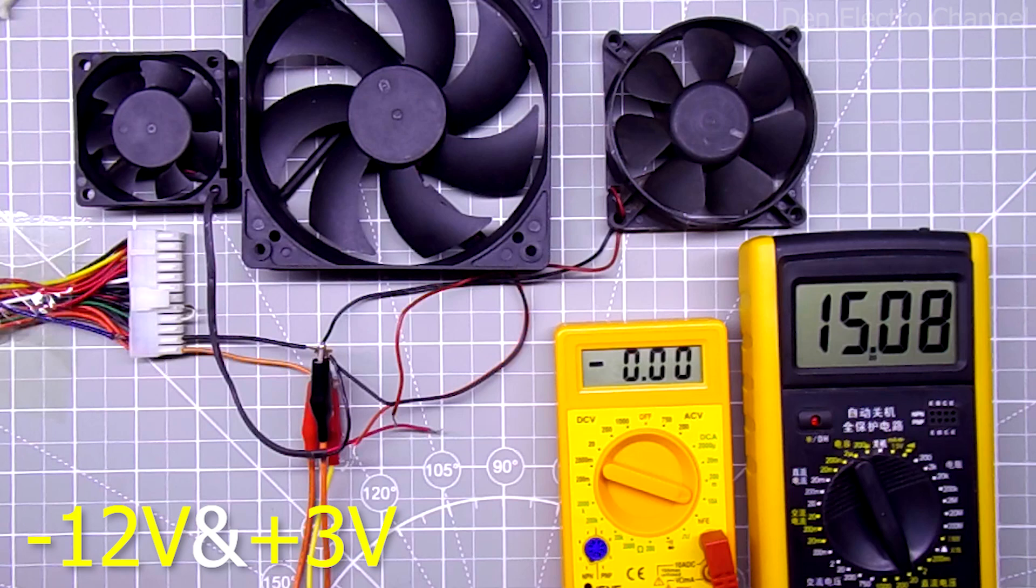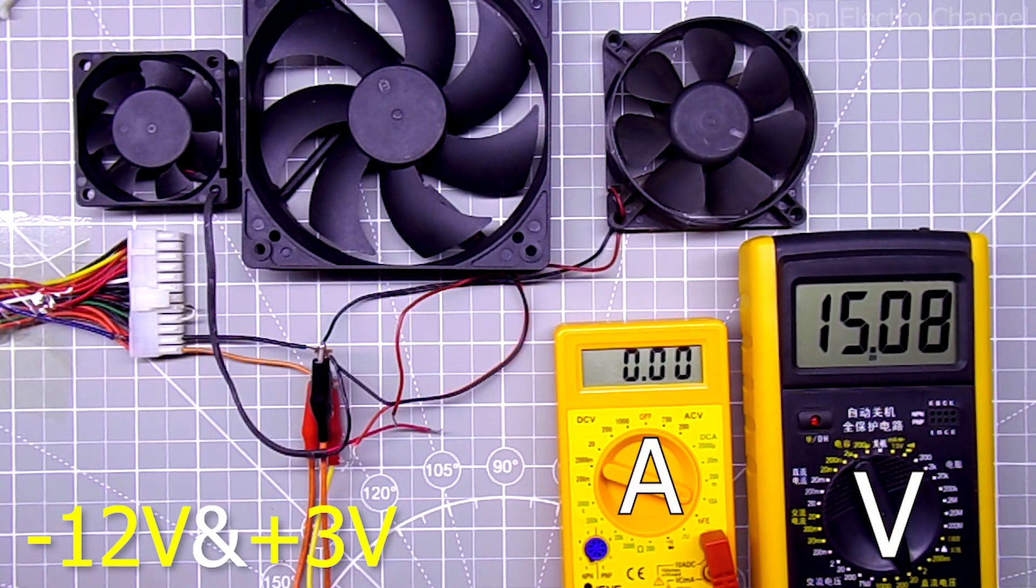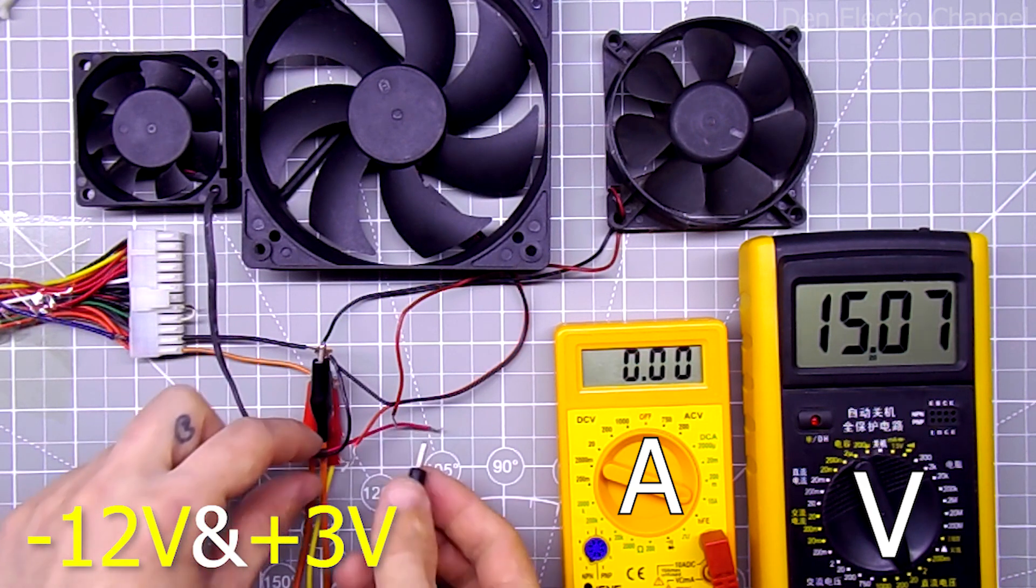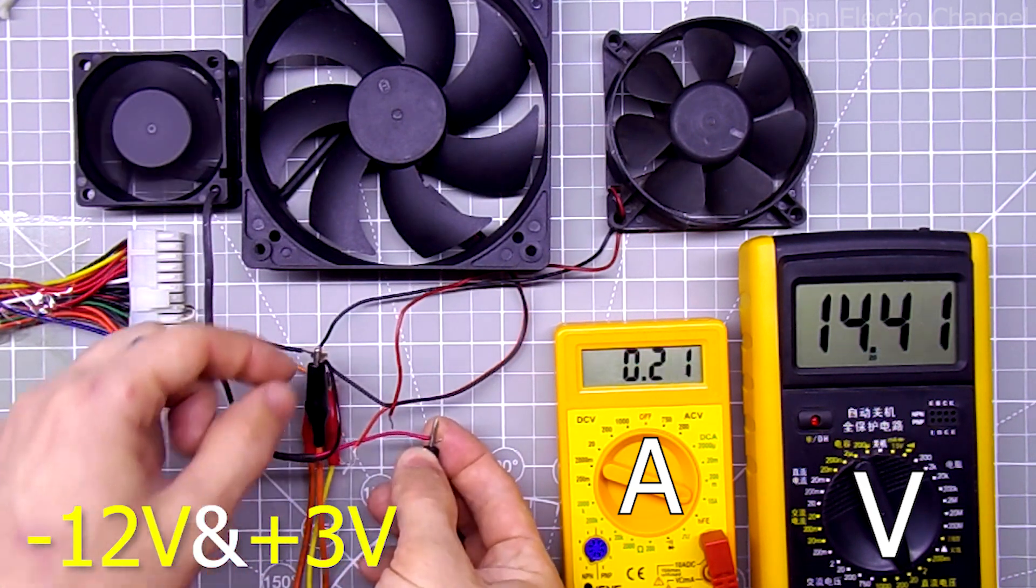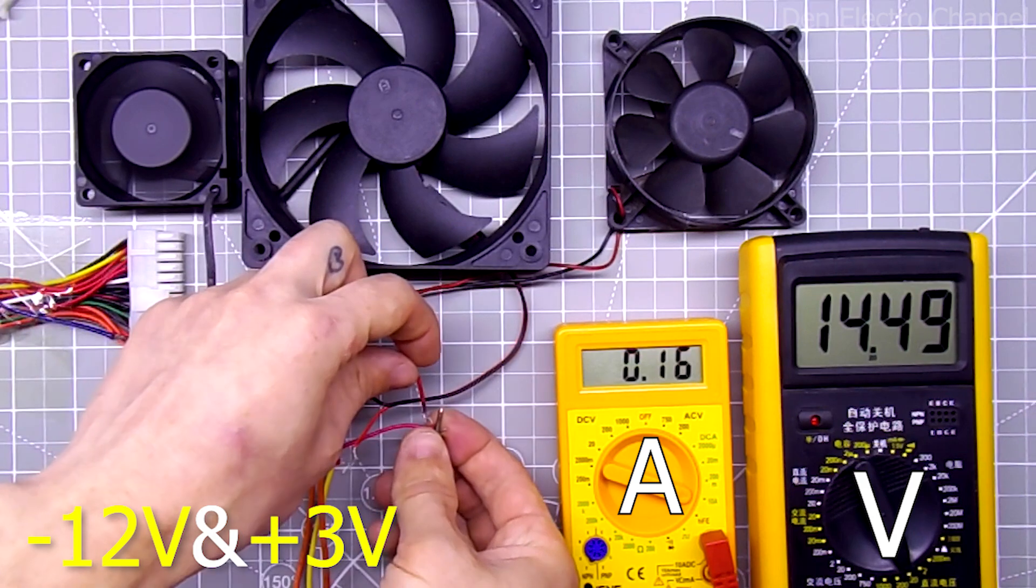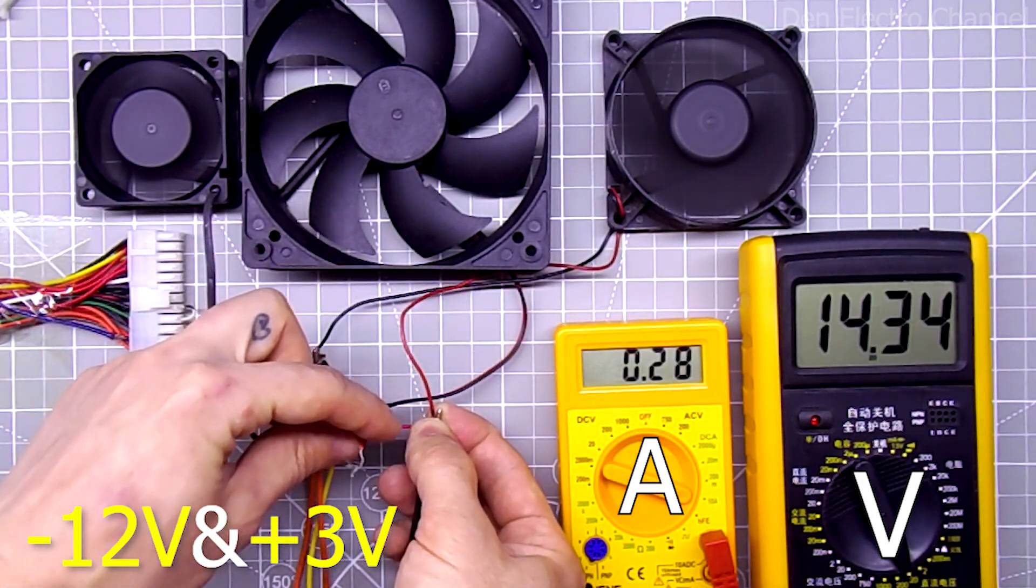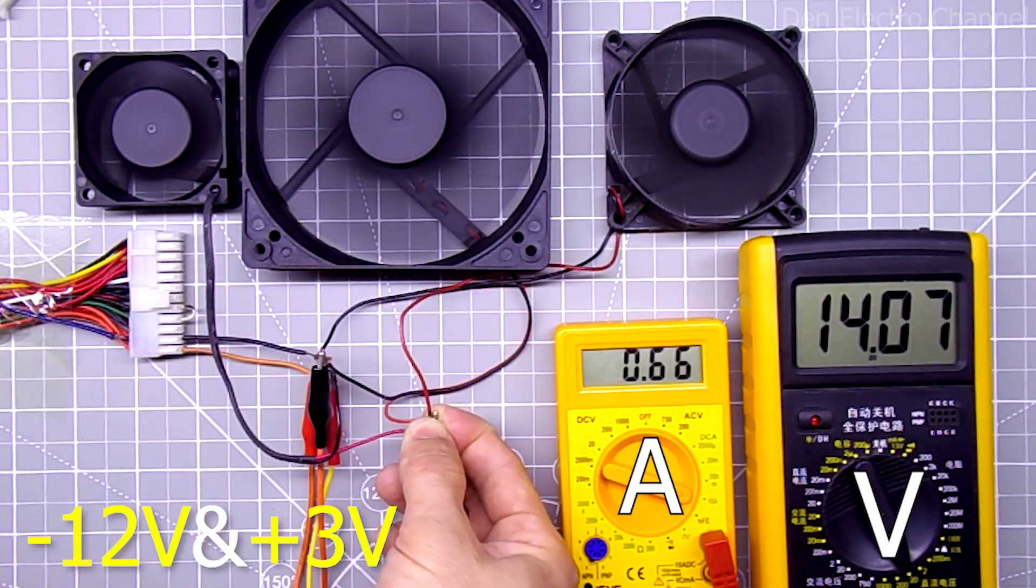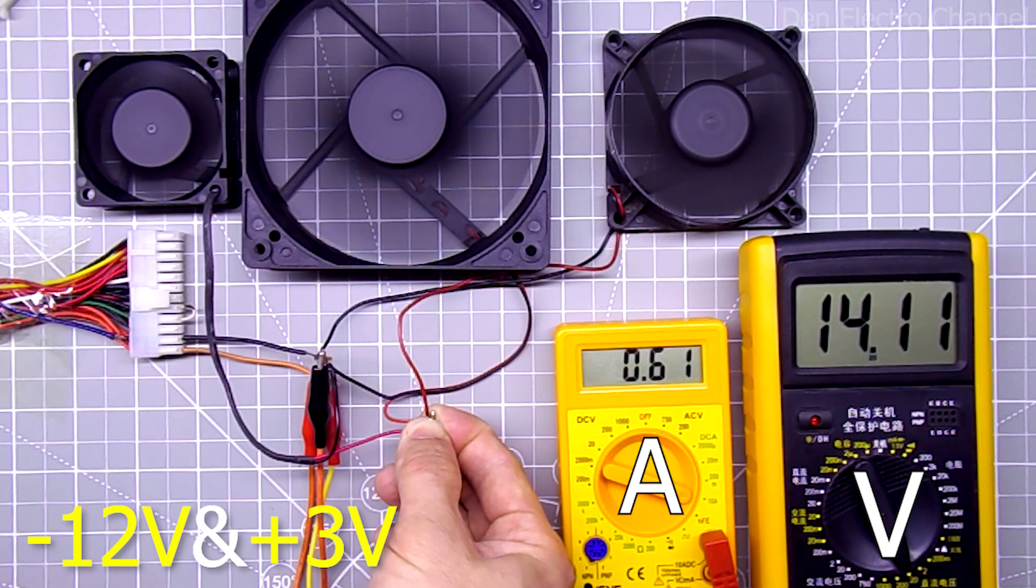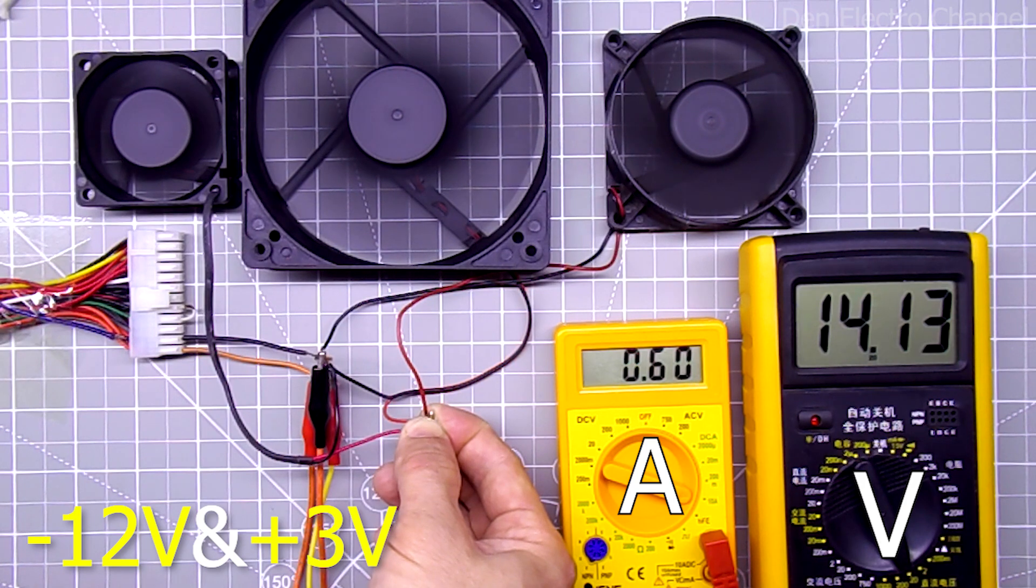Now let's connect minus 12 and plus 3 volts. There will be 15 volts between them. I connect the smallest fan. It starts, current is 170 milliamps, voltage has dropped by half a volt. Then the second fan and the third, the largest one. All three fans work fine. Together with them, the voltage dropped by almost a volt. Current 600 milliamps, not bad.